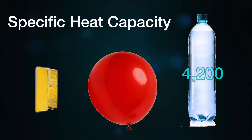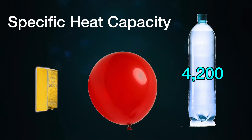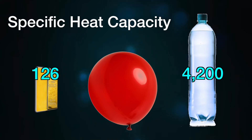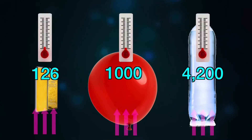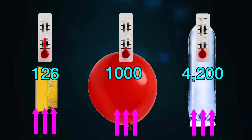For water, it's 4,200 joules of energy per kilogram degrees Celsius. So 4,200 joules of energy are needed to raise the temperature of one kilogram of water by one degree Celsius. For gold, it's 126 and for air, it's typically about 1,000. You can see how the same amount of heat causes very different temperature rises in our three kilograms of gold, air and water.